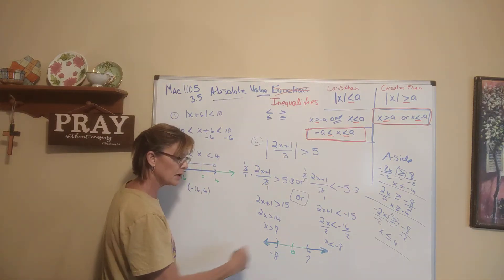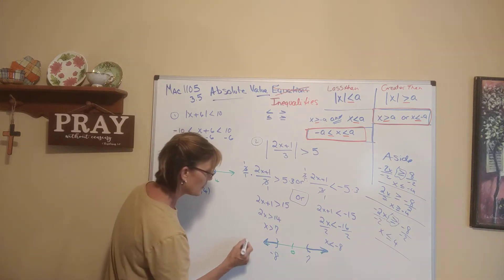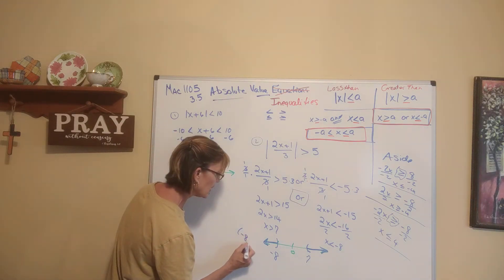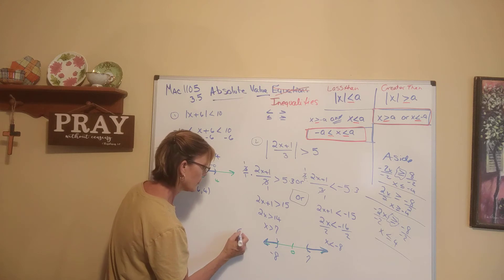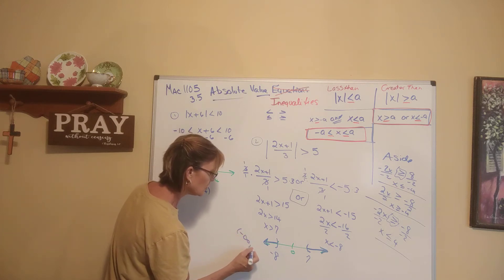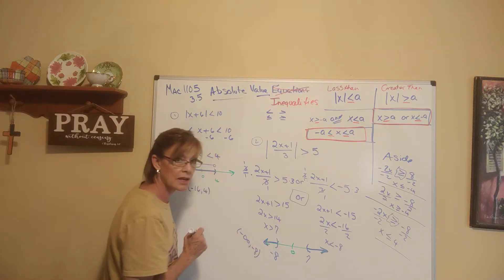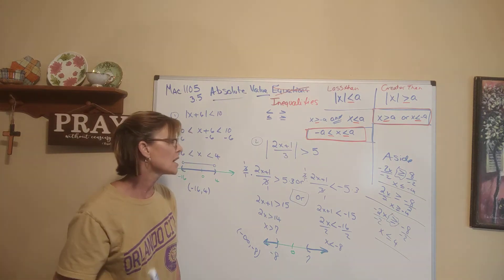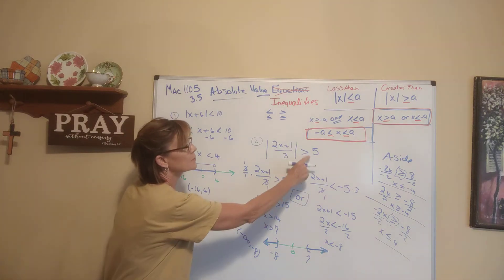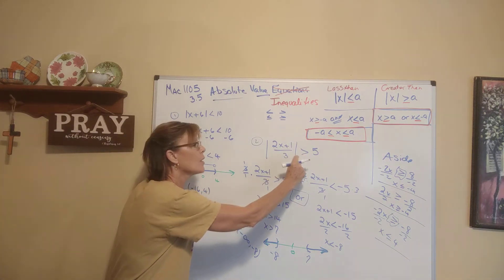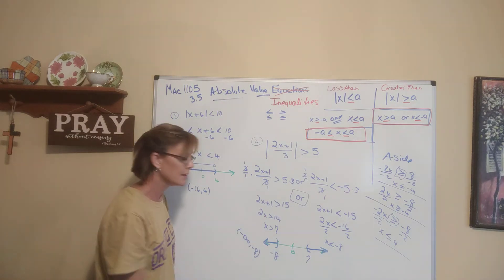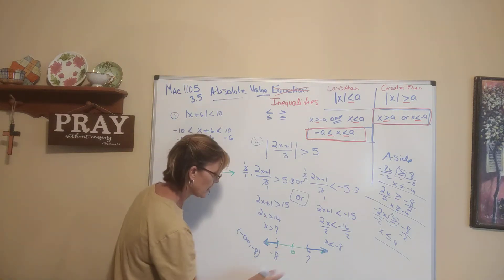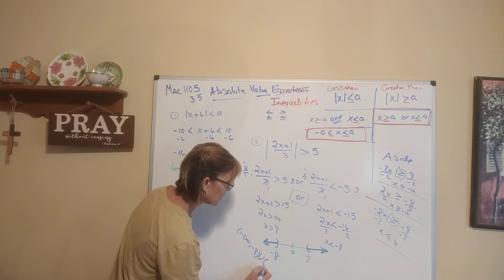The interval notation would be all of the highlighted part: from negative infinity to negative 8, not including negative 8 — and the only reason it's not included is because we don't have an or-equal-to. If I had or-equal-to, these would be brackets. Unioned with 7 to infinity.